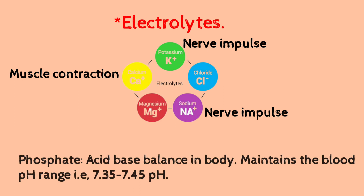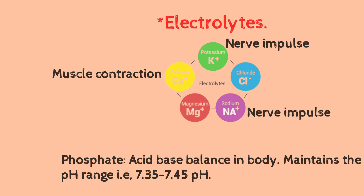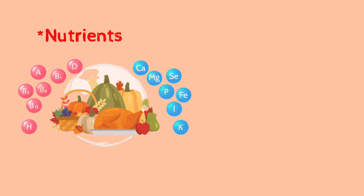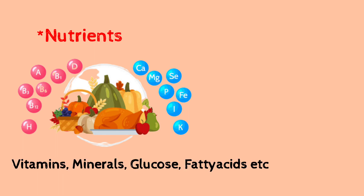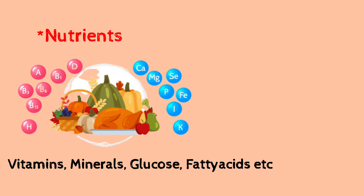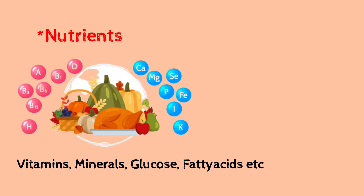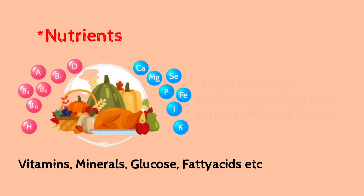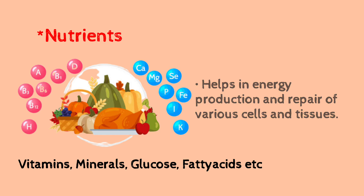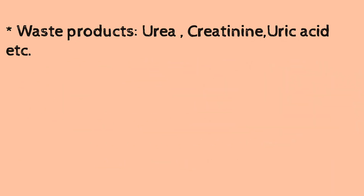Electrolytes are followed by nutrients, which are also present in plasma. These include glucose, amino acids, fatty acids, and vitamins. These nutrients are provided to the body to repair tissue damage. Plasma also carries waste products like urea, creatinine, and uric acid, which are metabolic waste products also present in plasma.